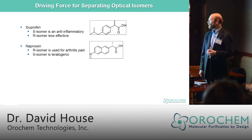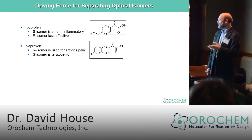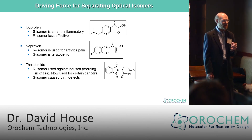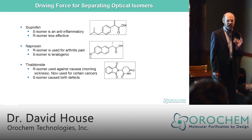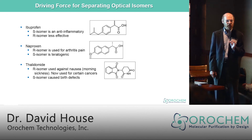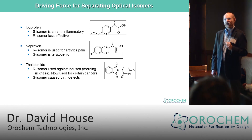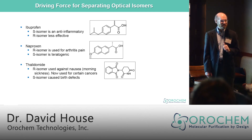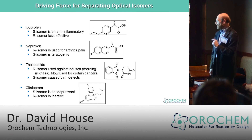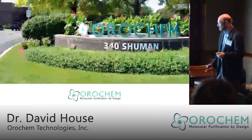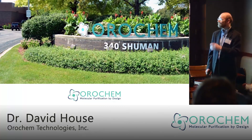Looking at naproxen, the R isomer is used for arthritis pain; however, the S isomer is a teratogenic compound. Looking at thalidomide — a classic example — in the late 1950s this was prescribed for pregnant women to combat morning sickness, and it's now used for treating certain cancers. The S isomer caused horrendous birth defects. The U.S. FDA prevented this compound from being sold in the U.S. Citalopram: the S isomer is an antidepressant, the R isomer is inactive, so again half the material is lost. There are many examples in the literature that address this.